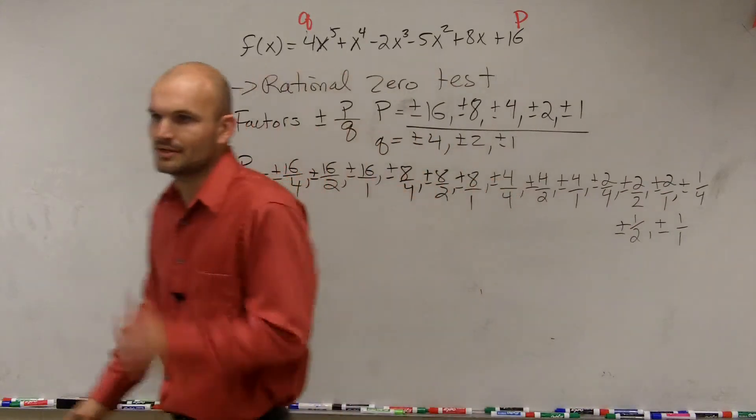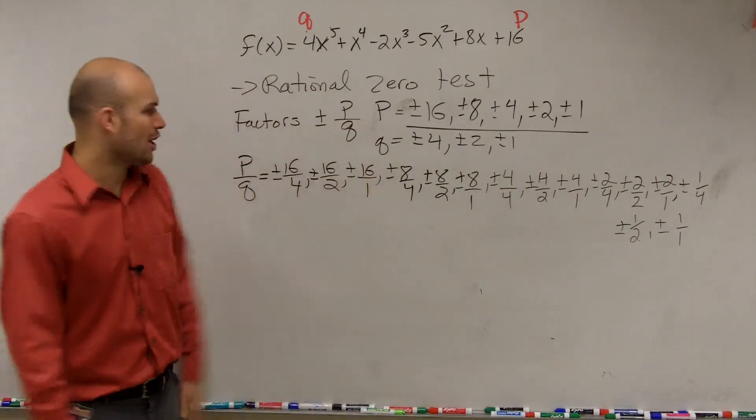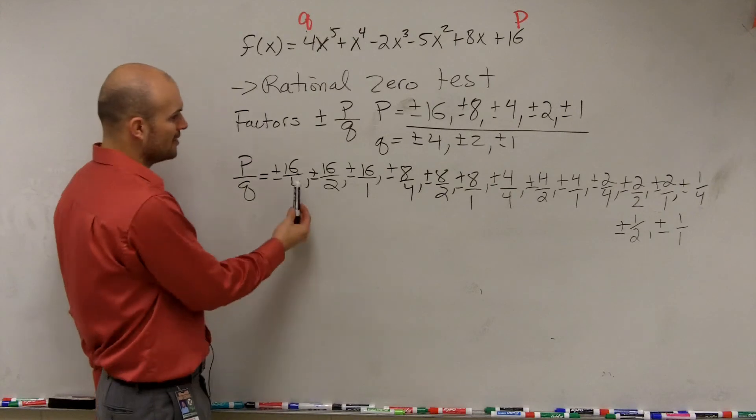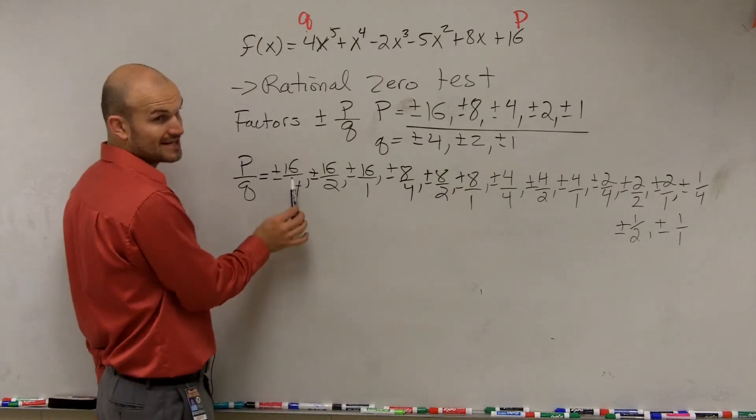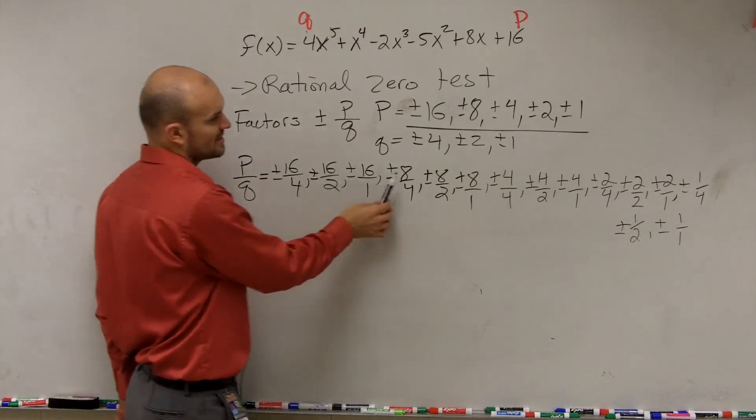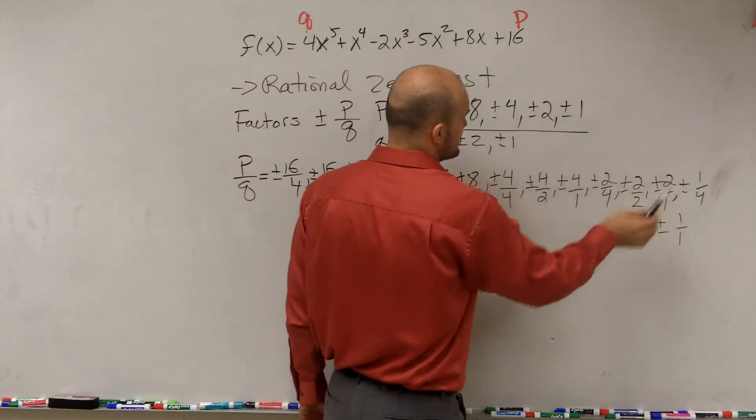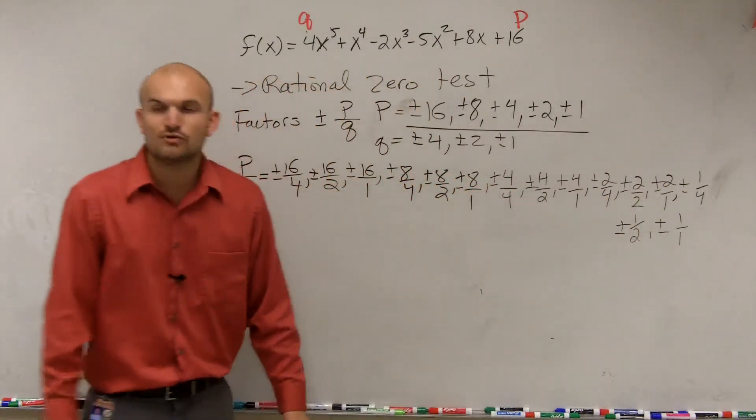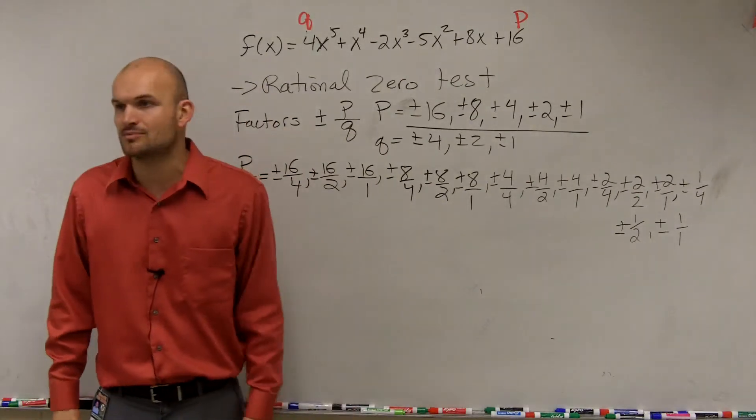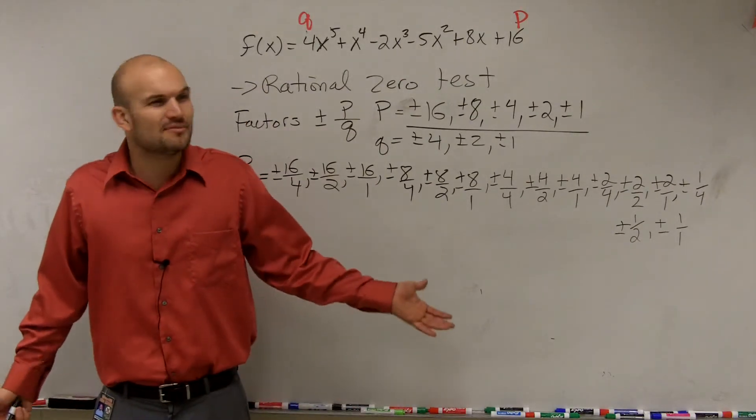Now you guys can see there's all, look how many possible zeros we have. Well there's positive and the negative, so counting them all up, you have a total of 30 possible rational zeros. But we haven't simplified this yet, have we?